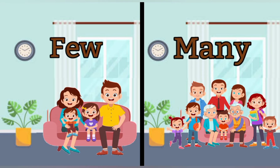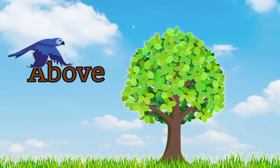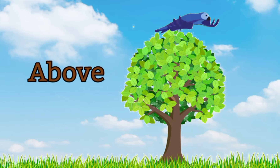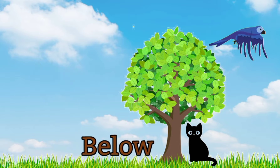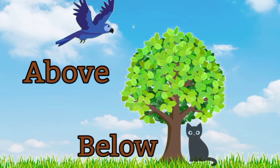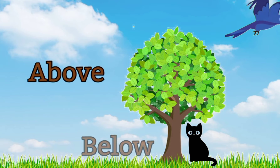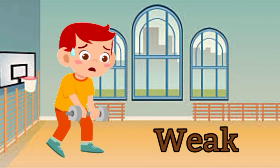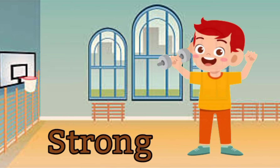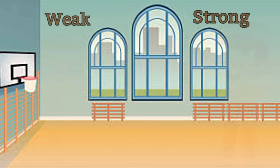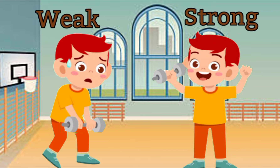Above — the bird is flying above the tree. Below — the cat is sitting below the tree. Above and below. Weak — this boy is weak. Strong — this boy is strong. Weak and strong.